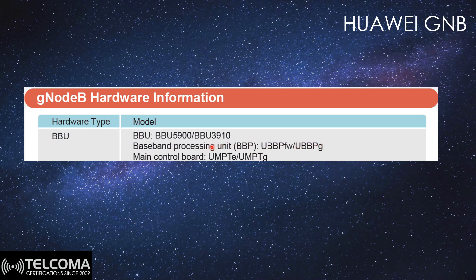Within the BBU we also have the transmission board — the UMTE and the UMTG — where UMTG is more advanced than UMTE. To draw a comparison to what we explained in the Nokia sessions: the BBU 5900 or BBU 3910 is equivalent to the Nokia AirScale overall system. The UBBFW and UBBPG are similar to the ABIL cards from Nokia, and the UMTE and UMTG transmission boards are similar to the ASIK board explained in Nokia.